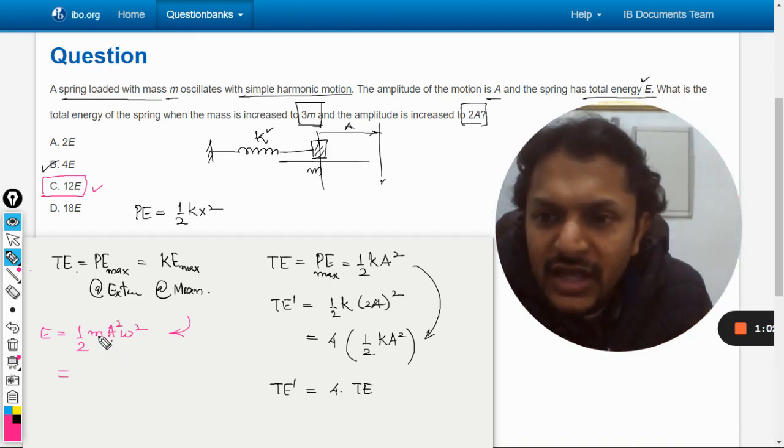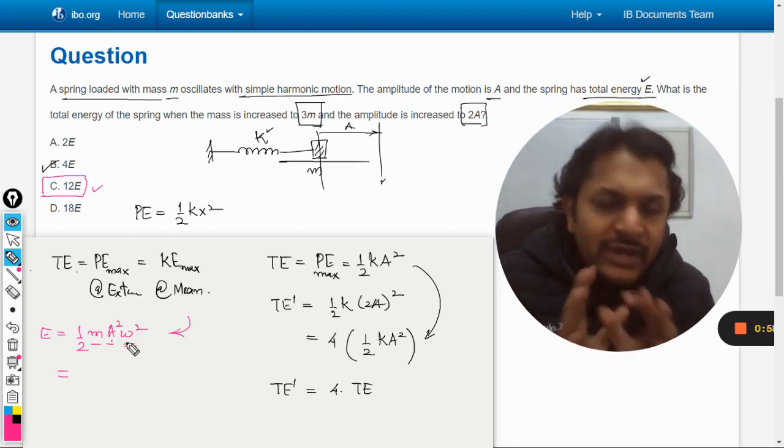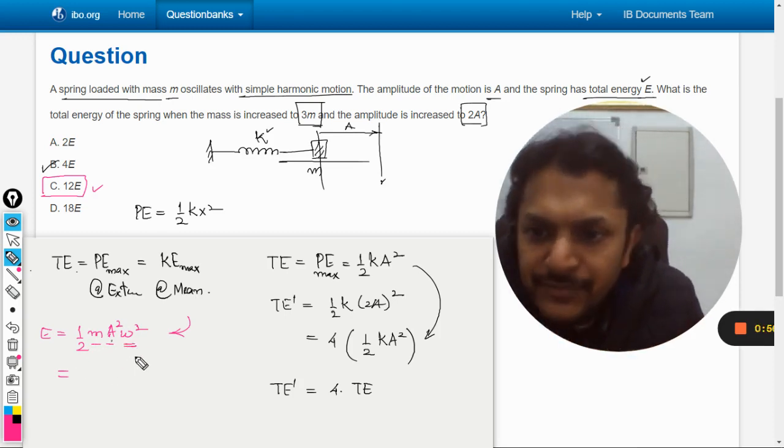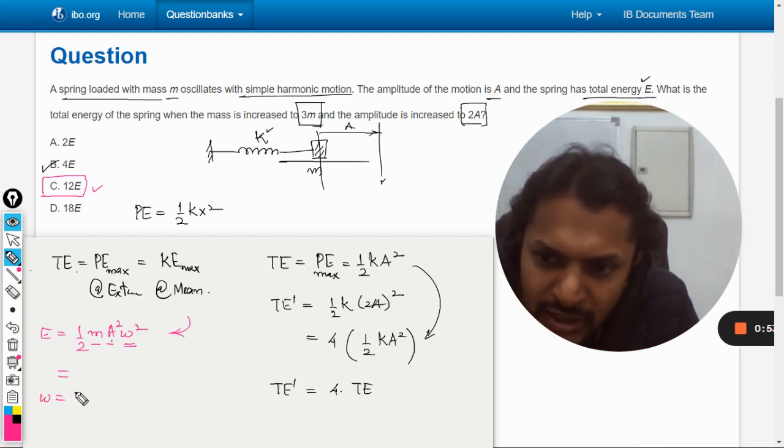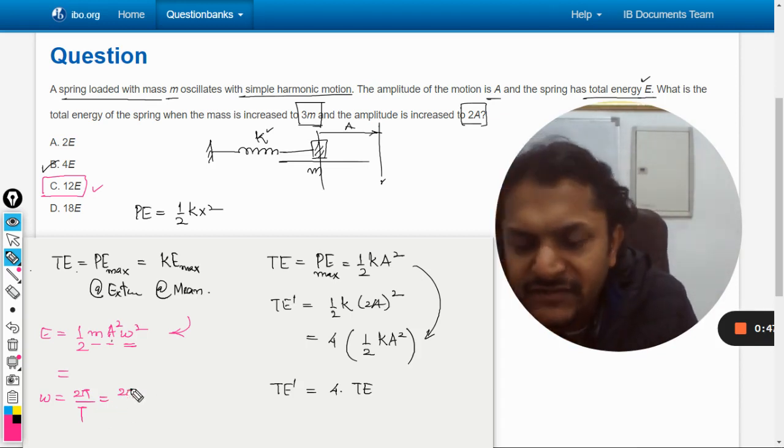Why? We can use such formulas only if all other variables are constant, like this mass and A. But are you sure that omega is constant? Let us see. Omega can be taken as 2π divided by capital T, so it will be 2π, and capital T will be...